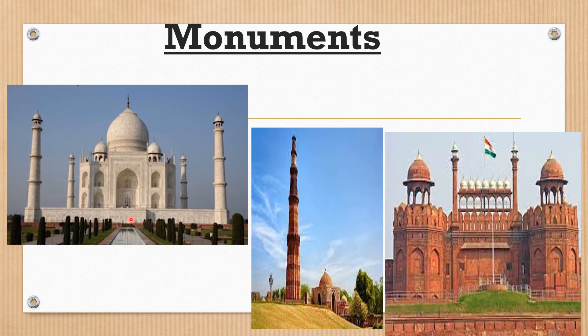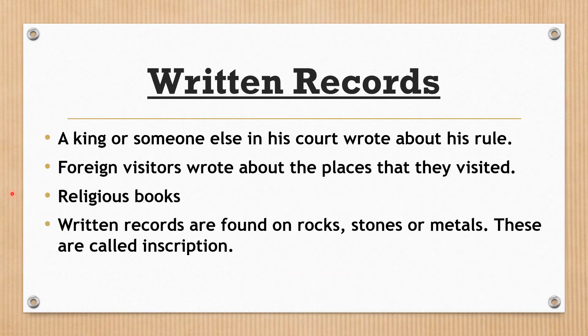Archaeologists use a brush to carefully uncover artifacts and weapons. People have also left behind buildings which can still be seen today, and these historical buildings are called monuments. Historians learn a great deal from them. Written records are another source — writings from early times are sometimes in a language like Sanskrit, which people can read. Many ancient Indian books are written in Sanskrit.